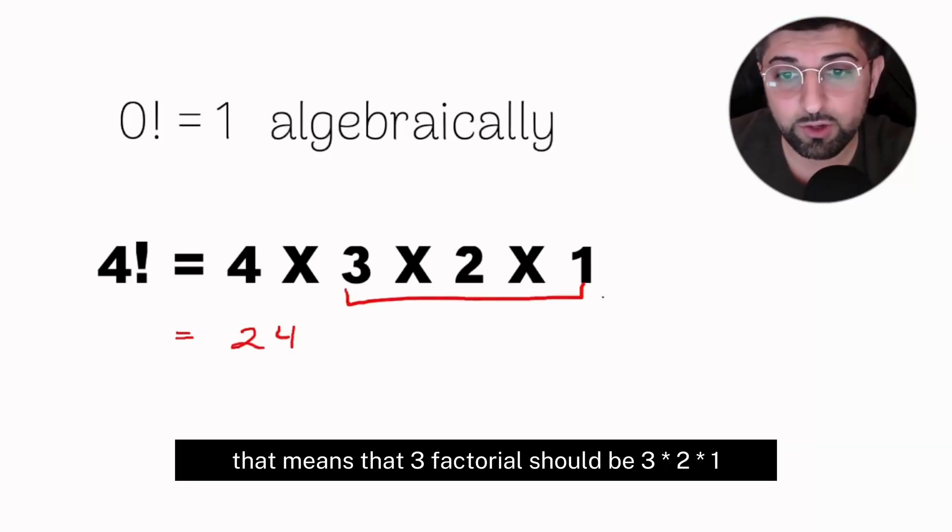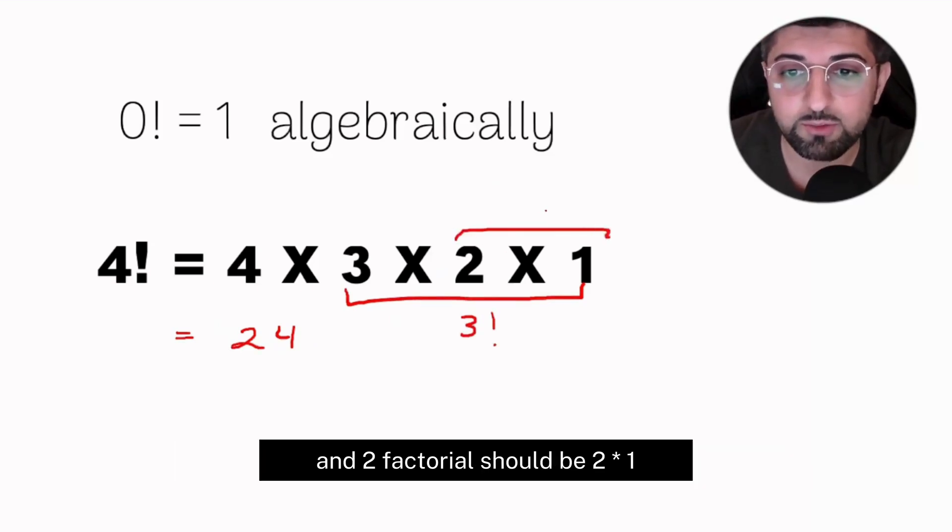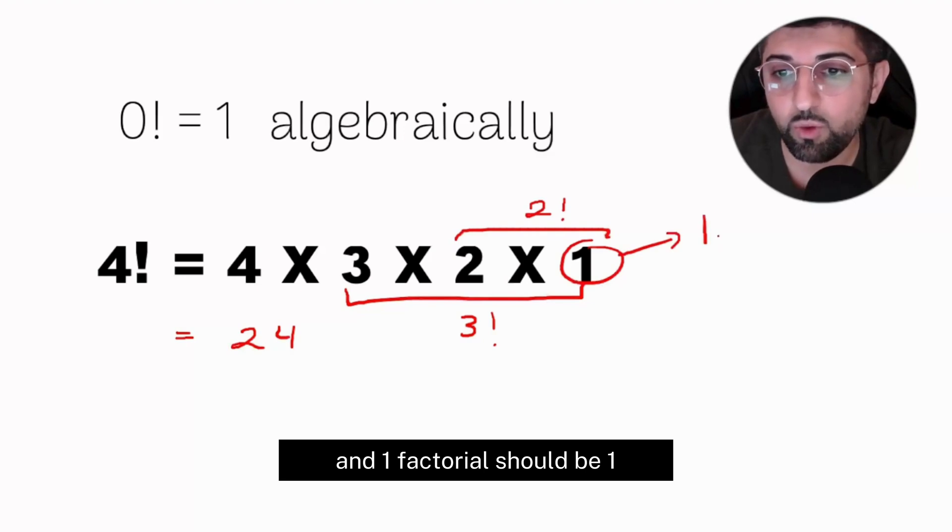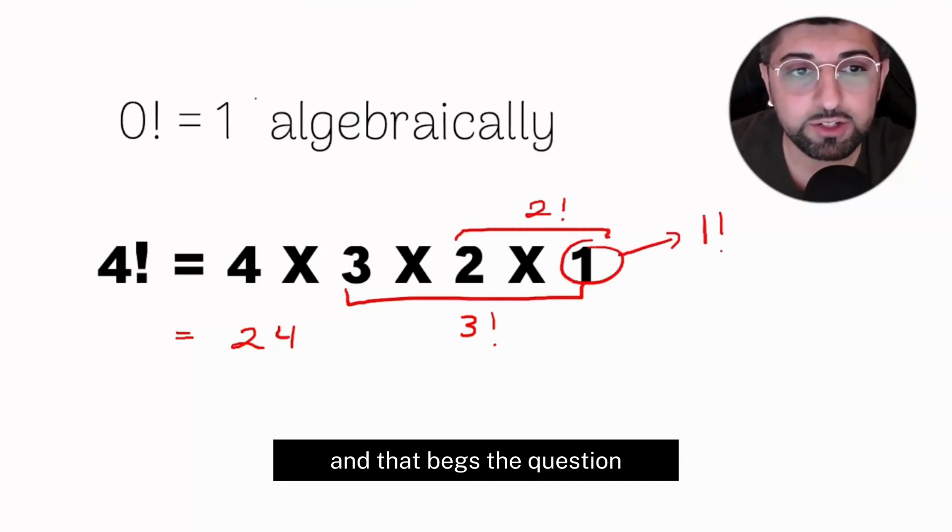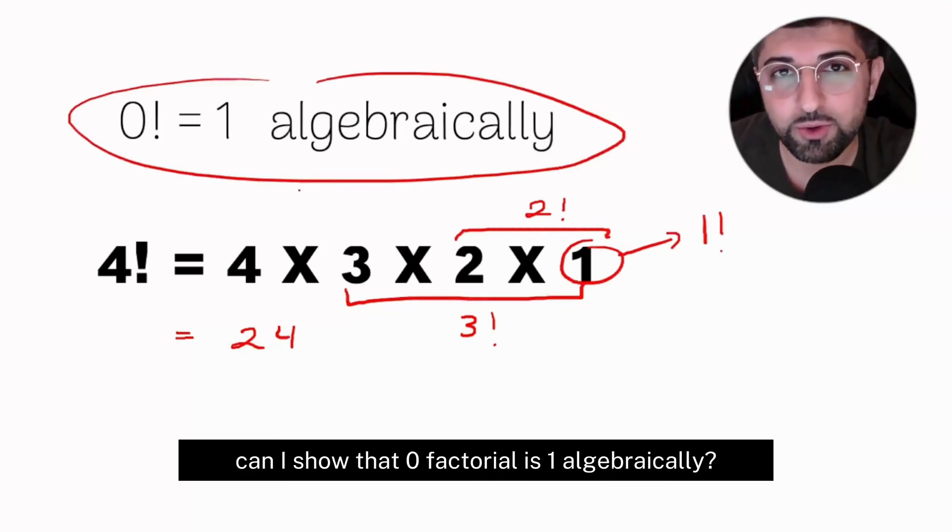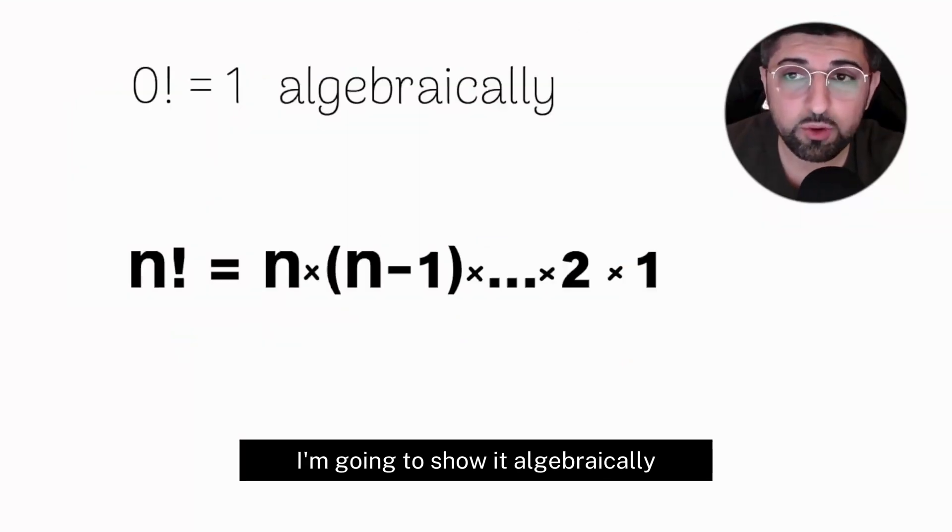That means three factorial should be 3 × 2 × 1, and two factorial should be 2 × 1, and one factorial should be one. And that begs the question: can I show that zero factorial is one algebraically? I'm going to show it algebraically.